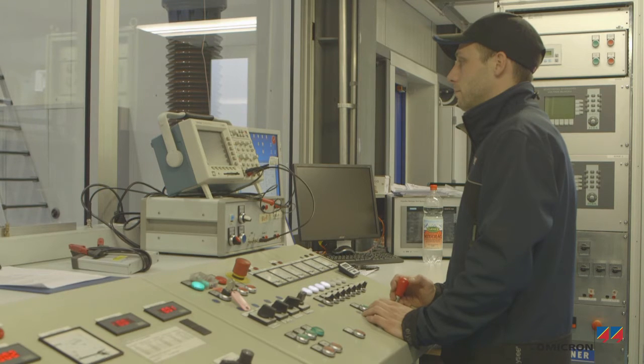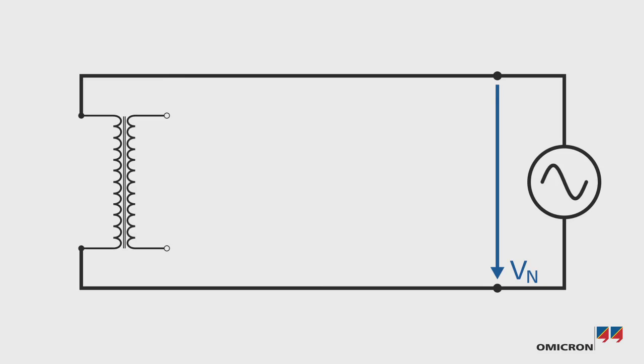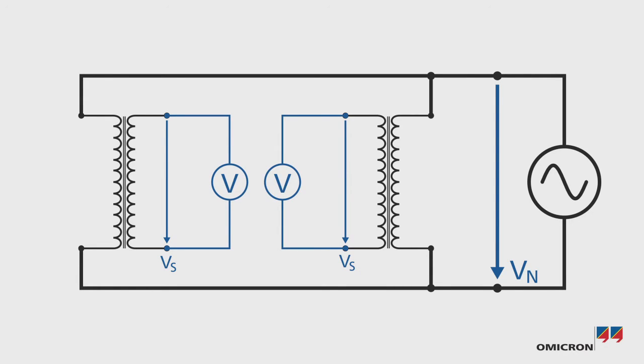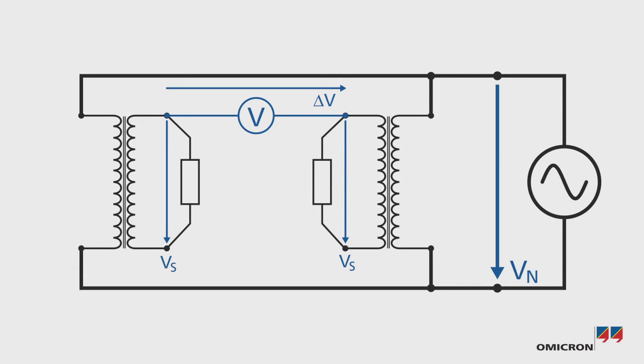The conventional method for verifying the accuracy of a voltage transformer is nominal voltage injection. During these measurements, the secondary voltage of the transformer is compared with the secondary voltage of a highly accurate reference transformer. For medium and high voltage transformers, nominal voltage injection methods include direct null and comparative null methods.